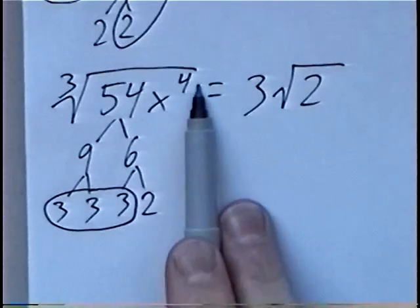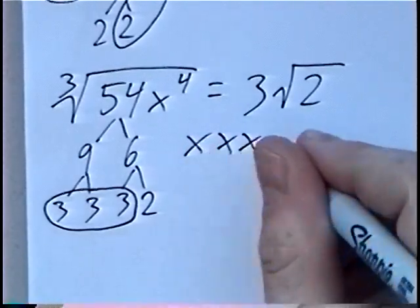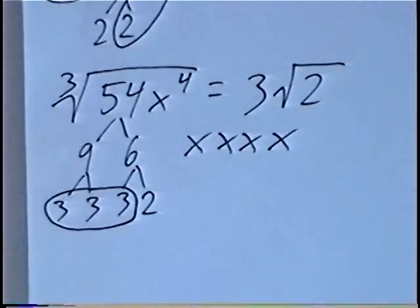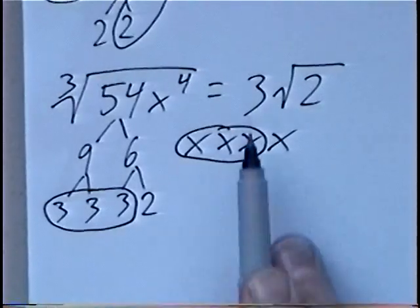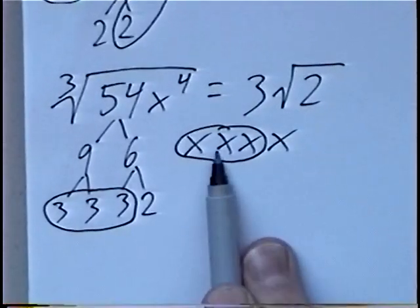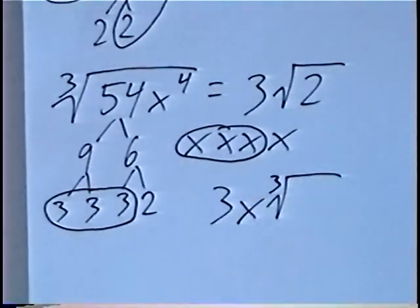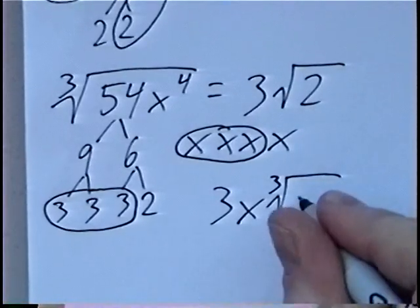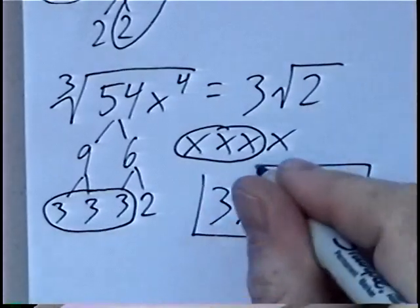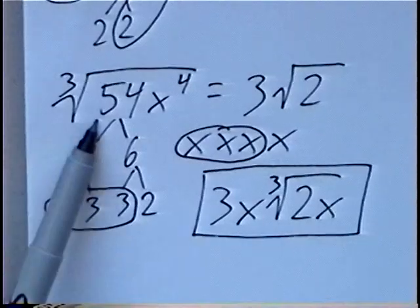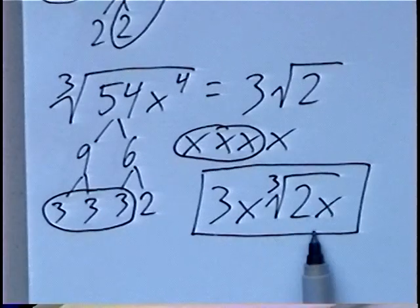For the final answer we also include the variable x to the 4th. We can write x to the 4th as four x's. For the cube root, we want sets of 3 — there's a single set of 3 x's, so x goes outside the radical as x. That leaves one x remaining inside. So our final answer: the cube root of 54x to the 4th simplifies to 3x times the cube root of 2x.